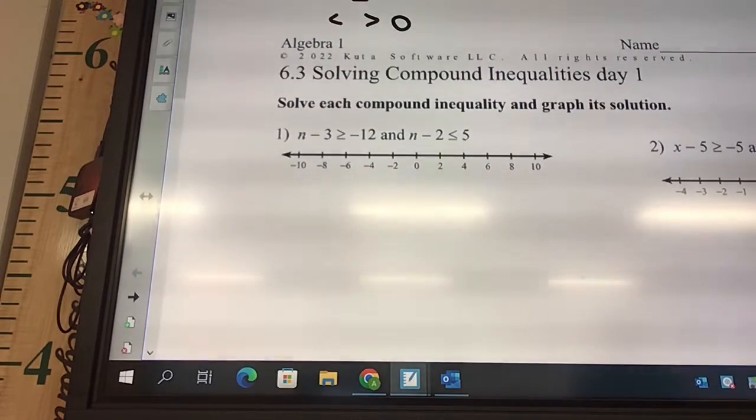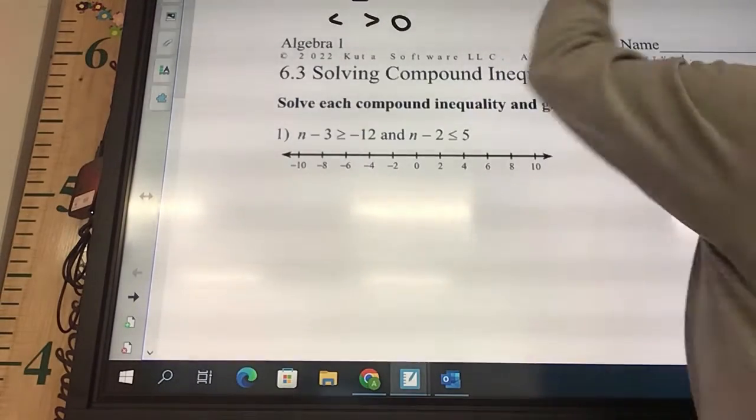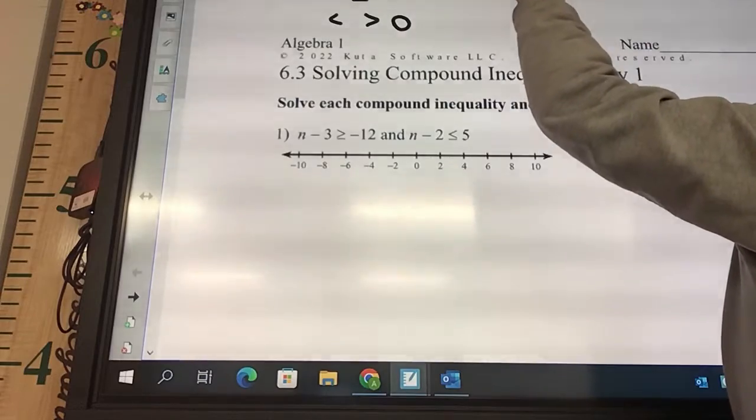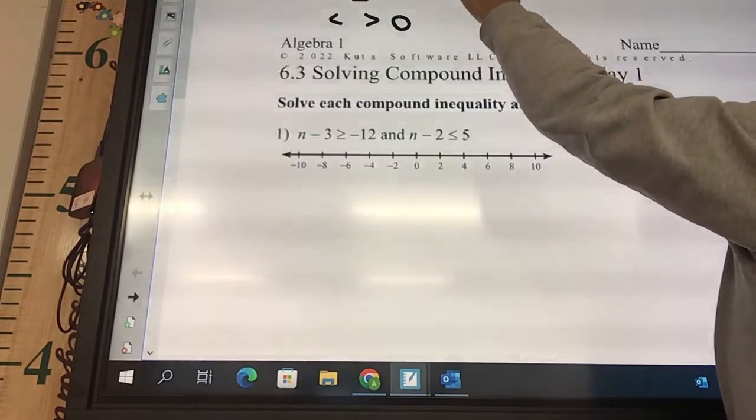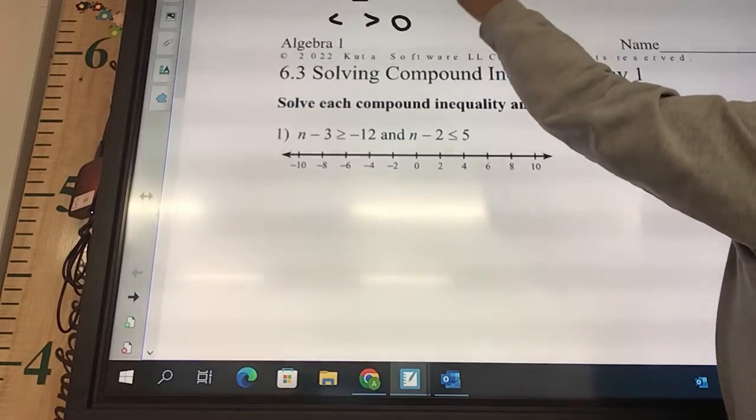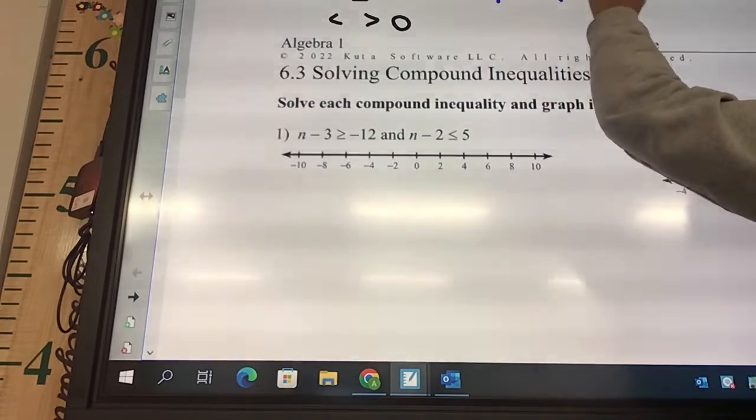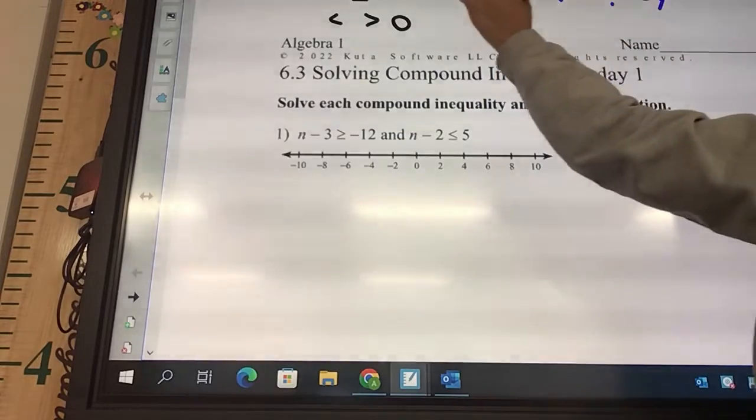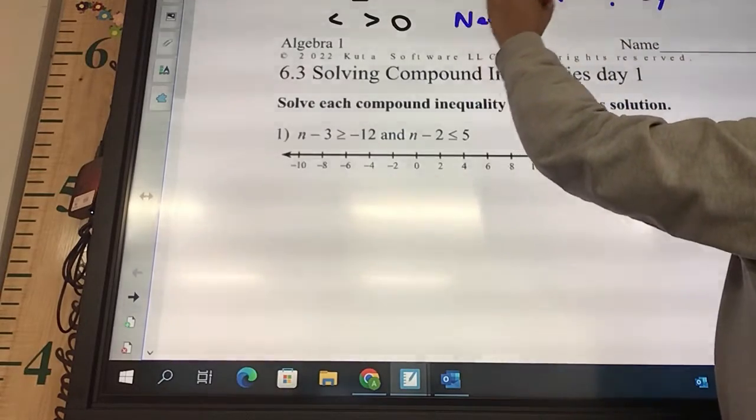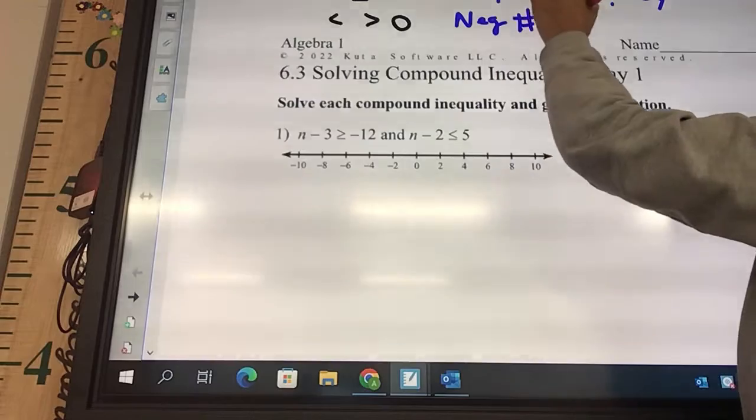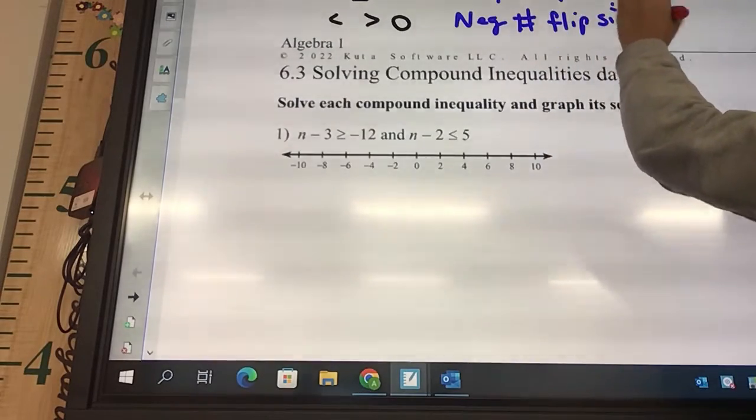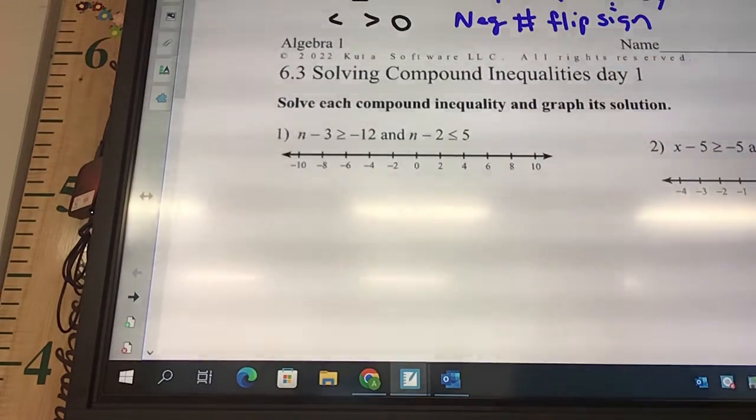Last but not least, and I don't remember if we've done this before, have we talked about flipping the sign, when to flip? When the number we're dividing by is negative. So if you multiply or divide by a negative number, flip sign. And then we'll see a pattern with the and and the or here in a little bit.